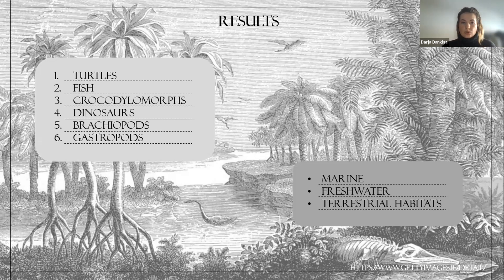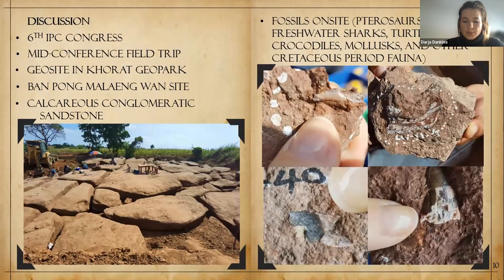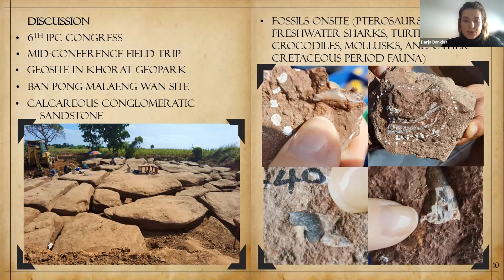The best explanation might be found in an analogous situation, though personally I had never seen such a combination of groups before. In November last year I participated in the Sixth International Paleontological Congress, probably the biggest paleontological event. During the scientific program there was an option to join a mid-conference field trip, and one of the stops was Coria del Río park, an important fossil site where you can find conglomeratic reddish sandstone with various fossil groups including dinosaurs, fish, turtles, crocodiles, and mollusks.